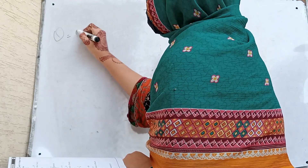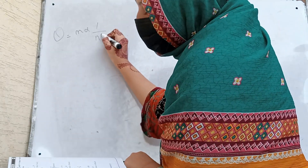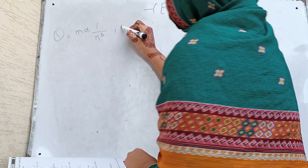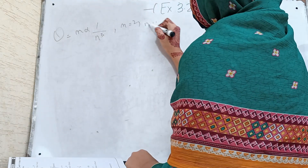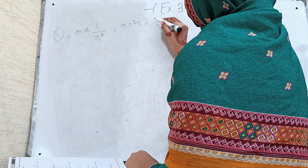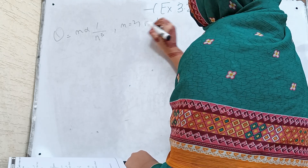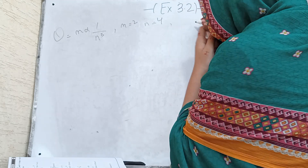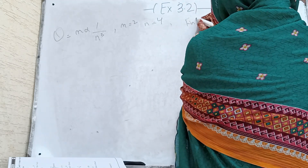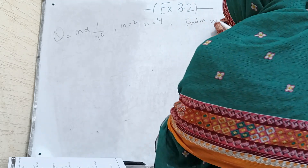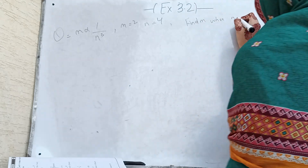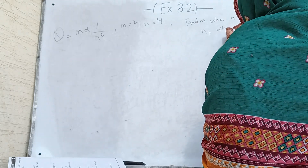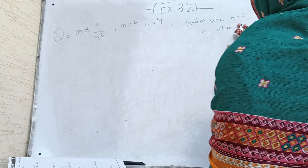The last part: if m is directly proportional to 1 by n cubed, and m is equal to 2 when n is equal to 4, find m when n is equal to 6 and find n when m is equal to 432.